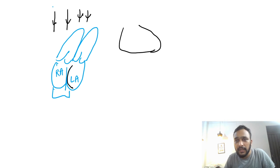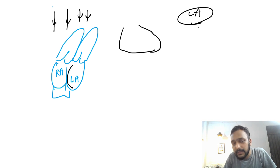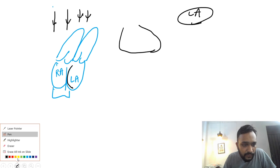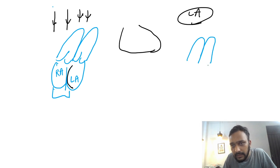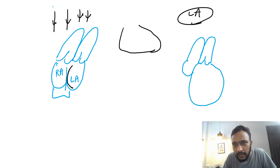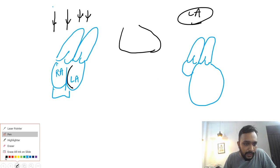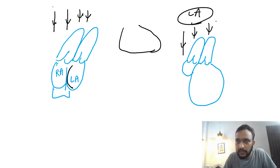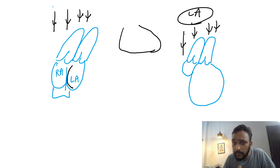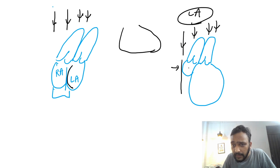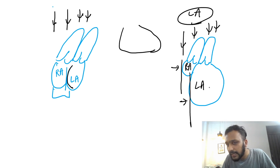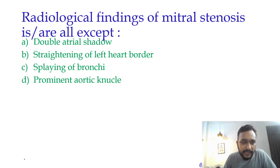In a case of left atrial enlargement, the size of the left atrium increases. When the X-rays fall on this left heart border, the right heart border of the enlarged left atrium will form a separate shadow. This separate shadow is what gives you the double density sign, also called the double atrial shadow.